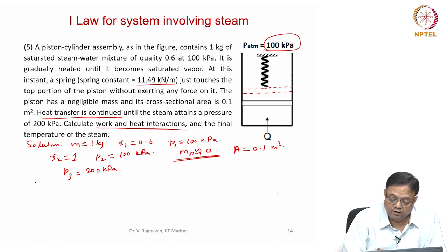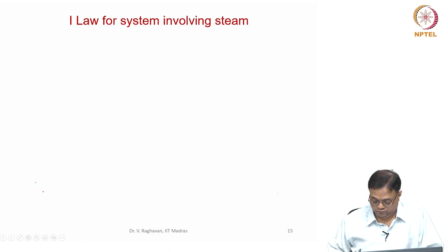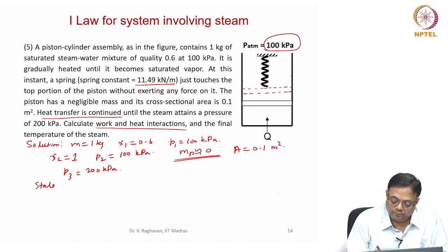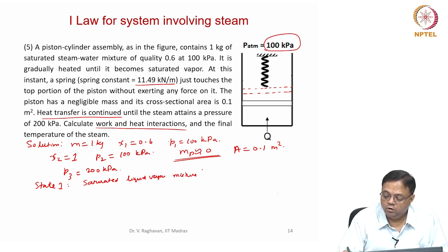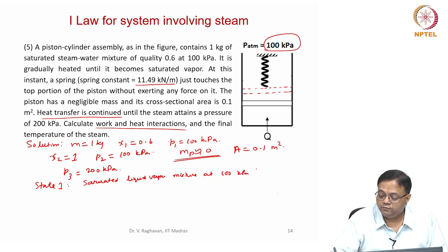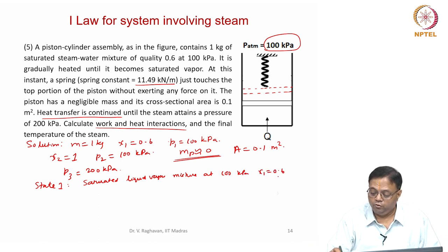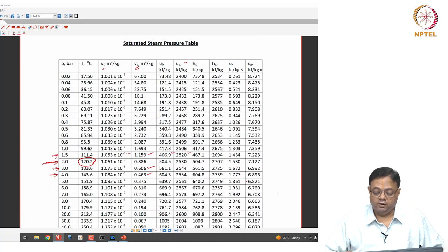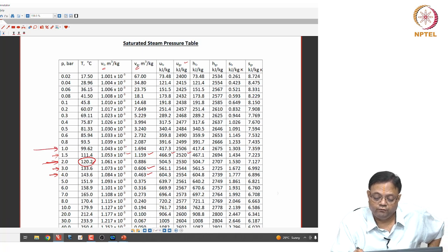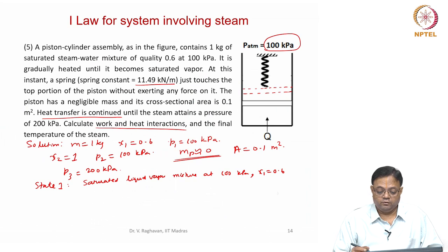Let us do the calculation for state 1. It is a saturated liquid vapour mixture at 100 kilopascals and quality 0.6. We go to the saturated tables. 100 kilopascals is 1 bar. From this table we can take the values of Vf, Vg, Uf, and Ug.